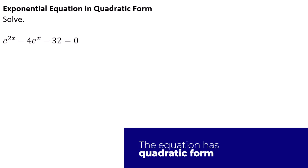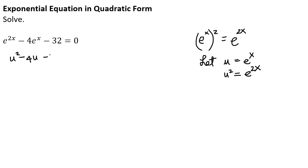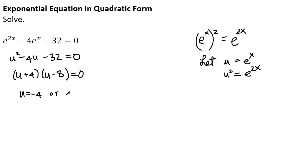Next we're going to solve an exponential equation that's in quadratic form. Notice that e to the x squared equals e to the 2x. We let u equal e to the x, so u squared equals e to the 2x. The equation becomes u squared minus 4u minus 32 equals 0, and we factor it — remember if you can't factor you can use the quadratic formula — giving u plus 4 times u minus 8 equals 0.